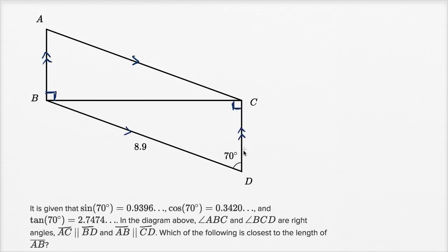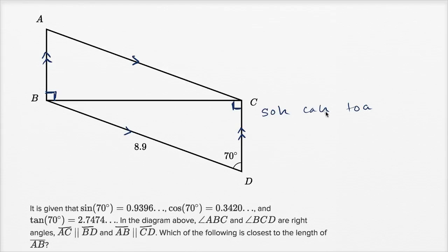If they were asking us for the length of side CD, we could immediately apply our trigonometry. Because for this bottom right triangle BCD, we could apply the SOHCAHTOA definition of cosine. Sine of an angle is opposite over hypotenuse. Cosine of an angle is adjacent over hypotenuse. Tangent of an angle is opposite over adjacent.